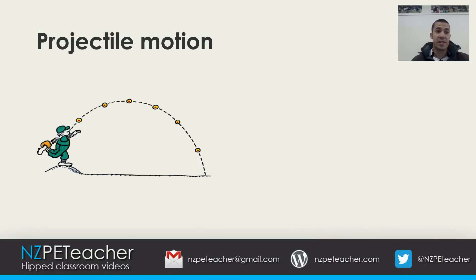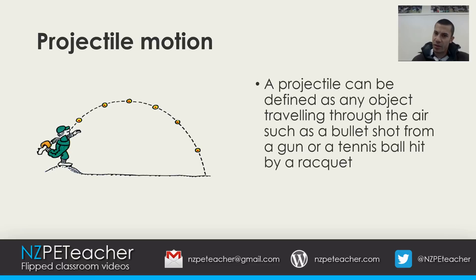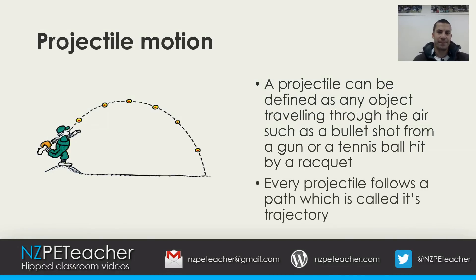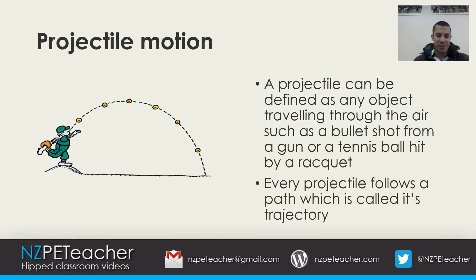To remind you, a projectile can be defined as any object traveling through the air, such as a bullet shot from a gun or a tennis ball hit by a racket. Every projectile follows a path which is called its trajectory. When we think of projectiles in sport we usually think of objects that have been thrown or hit, such as balls and javelins.